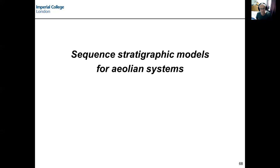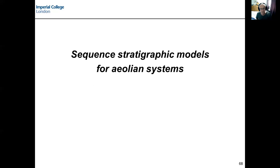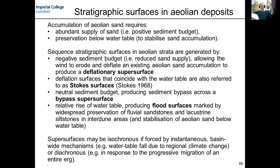Let's think about sequence stratigraphic models for aeolian deposits. Sand accumulates when there's abundant supply, but we also need to preserve those sands. Typically it's the water table that acts as the equivalent to sea level in a shallow marine setting. If sand is deposited below the water table, thin films of water around the grains bind them together and stop them being blown off. The water table is base level. Where we have dry sand and vigorous wind, we can have erosion - accumulations of sand eroding away to generate what's referred to as a deflation surface, where any sand above the water table is blown off. These deflation surfaces are also referred to as Stokes surfaces in the literature.